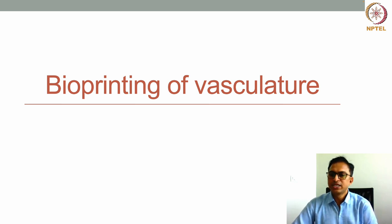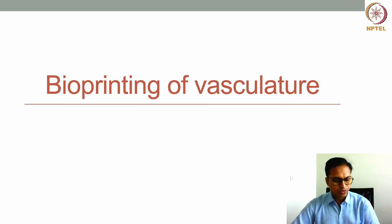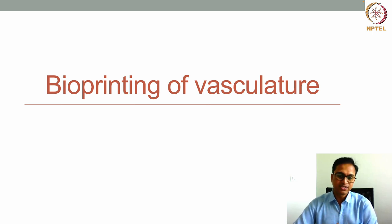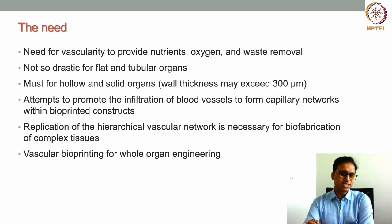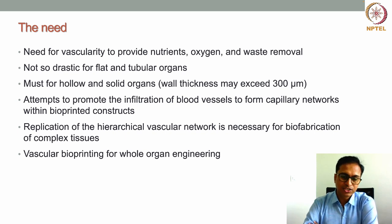Vasculature is the most important thing for sustaining the growth and function of different target tissues and organs. The very first challenge in fabricating solid organs is the fabrication of an embedded vasculature system within the bioprinted organ. We'll discuss different strategies, the anatomy of blood vessels, vessel hierarchy, and what bioprinting modalities can be used.